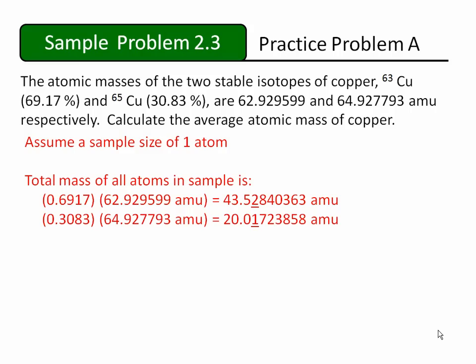Our units at the end of each of these calculations is AMU, and the last significant figure in each value is the fourth significant figure, based on our percentages, which were known to four significant figures. The total mass of the sample is the sum of these two values. If you added them all up, you would get 63.54564221 AMUs.